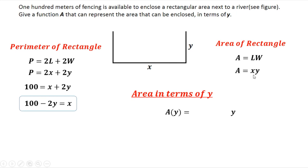But our x, that's 100 minus 2y. Then you simplify, so distributive property. So A(y) now, that's 100y minus 2y squared. So this is the area in terms of y.